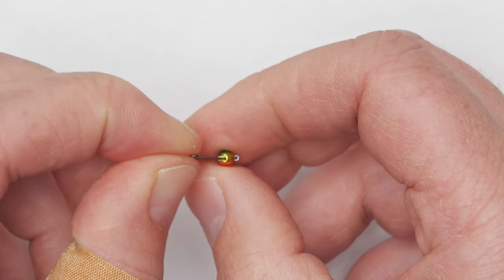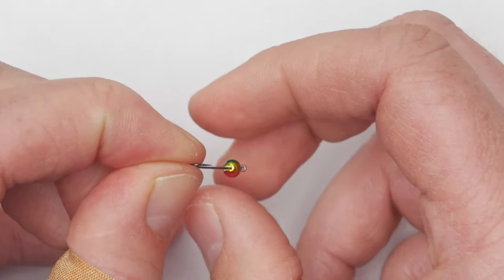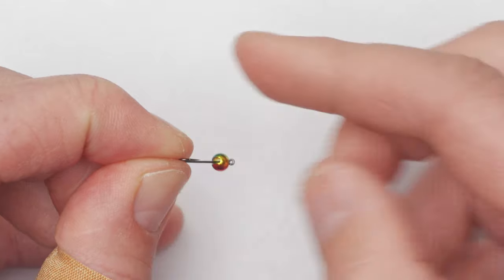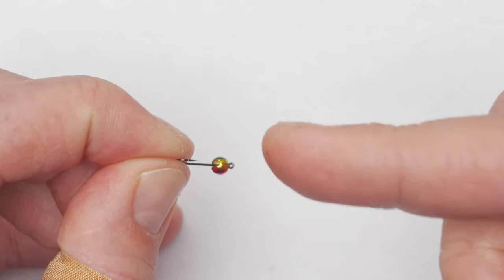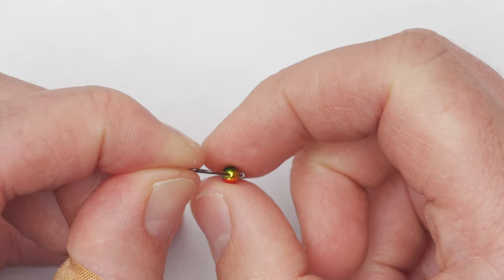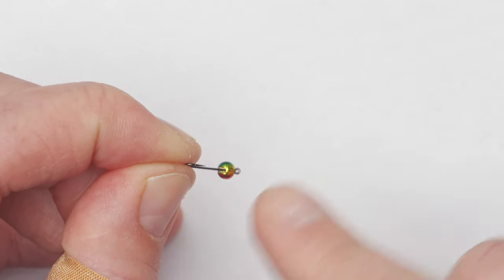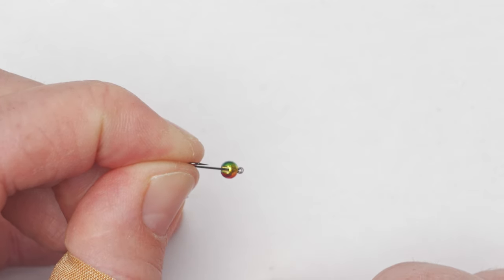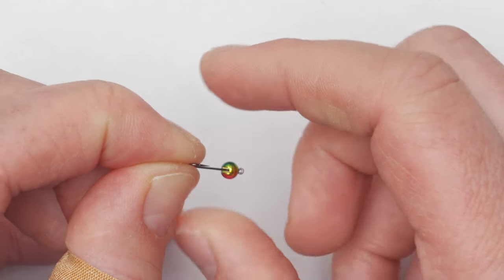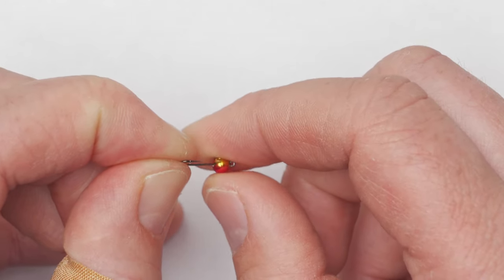Now I will hold my hook just like that, just to make sure that the slot is orientated vertically if you like, to make sure that most of the weight of that bead is below the shank. This will enable me to have a better presentation where the hook's point will be looking upwards most of the time.